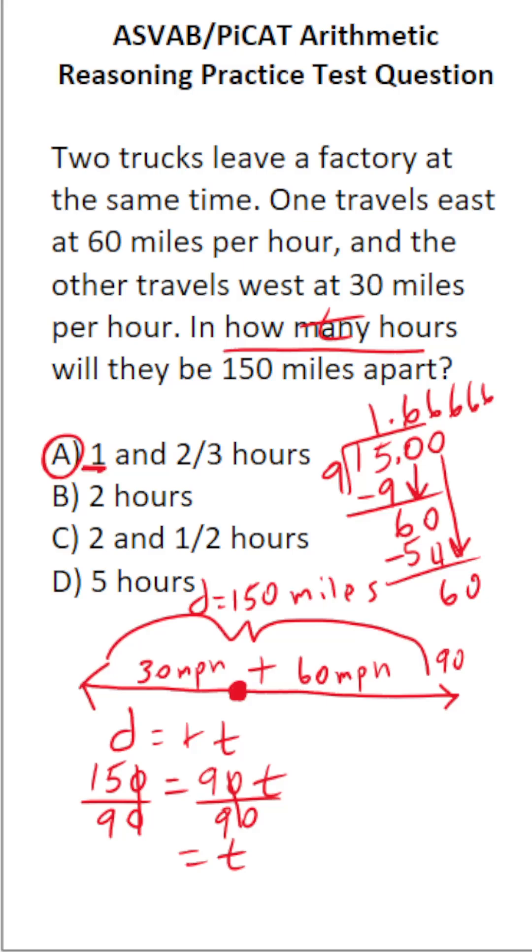In other words, 0.66 repeated is the same thing as two-thirds as a fraction. So this is going to be one and two-thirds hours. In other words, it's going to take them one and two-thirds hours to be 150 miles apart. And that confirms that A is, in fact, the correct answer choice.